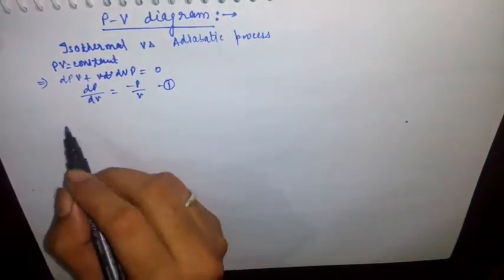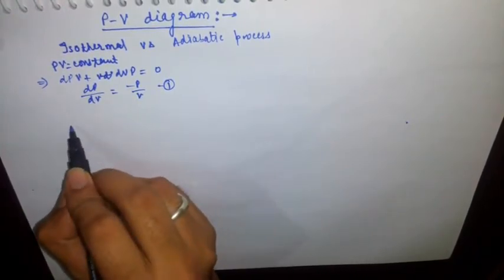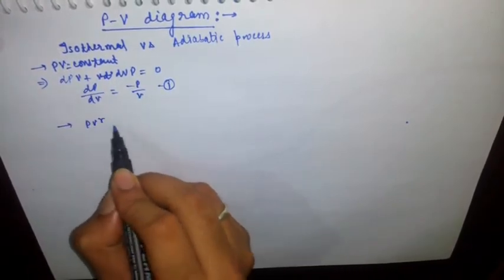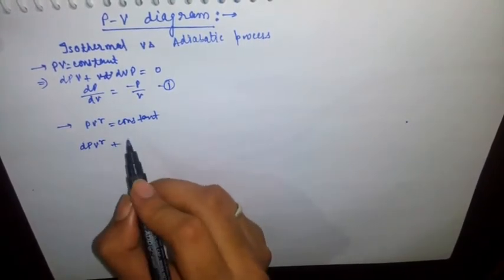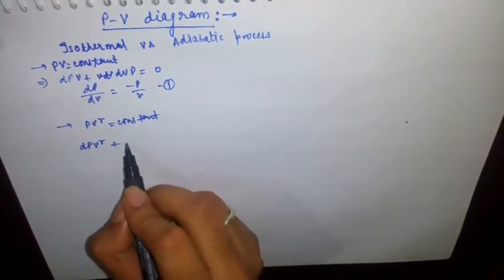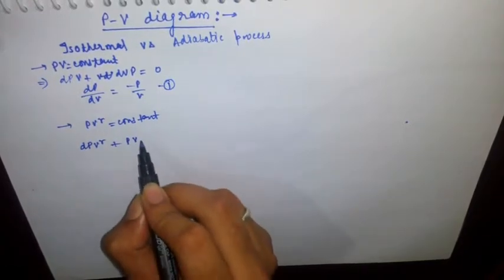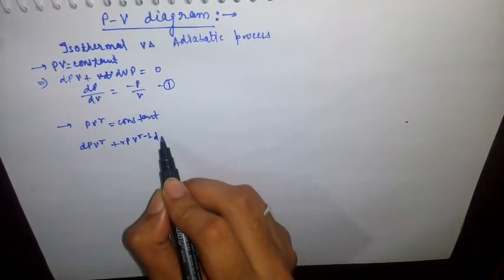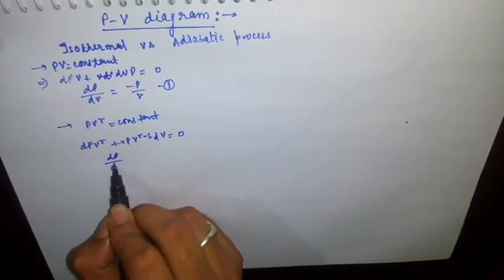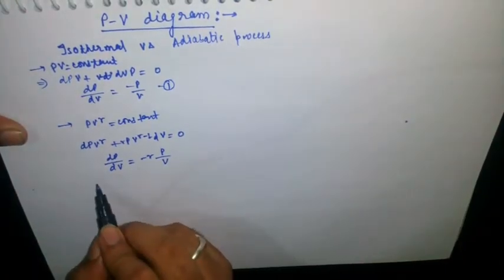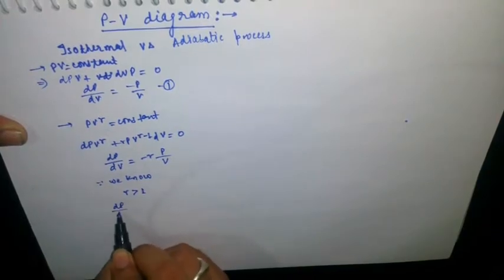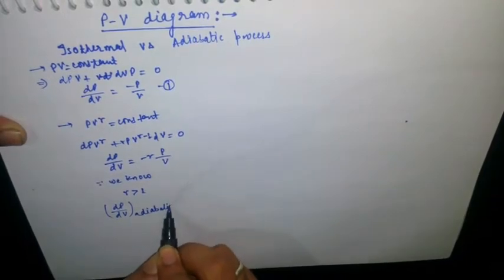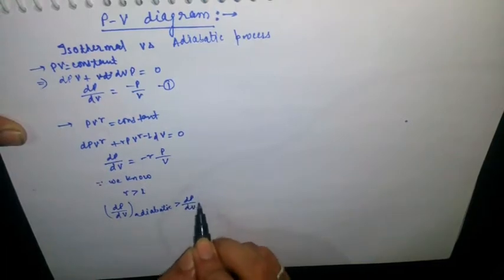For the adiabatic process, PV to the power gamma is equal to constant. Differentiating this equation gives dp·V^γ + p·V^(γ-1)·γ·dV = 0, so dp/dV equals minus γp/V. Since gamma is always greater than 1, the slope dp/dV for adiabatic is greater than dp/dV for isothermal.